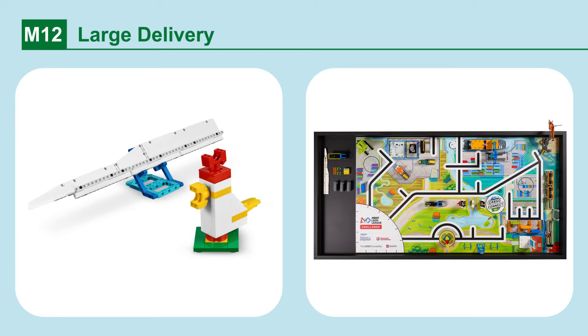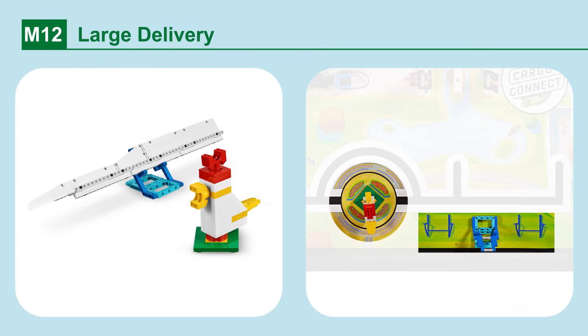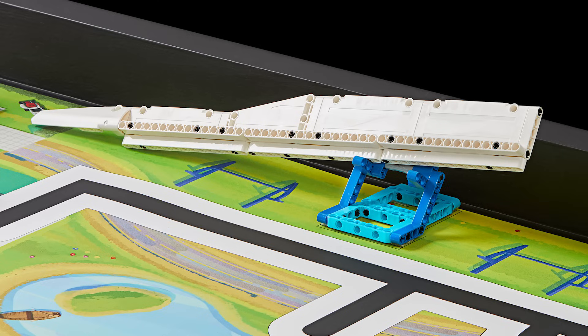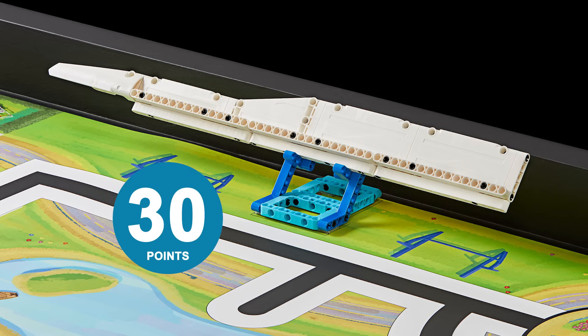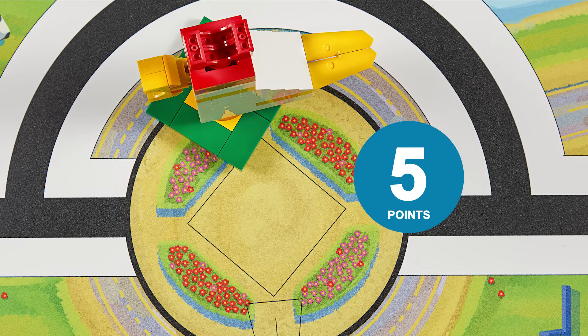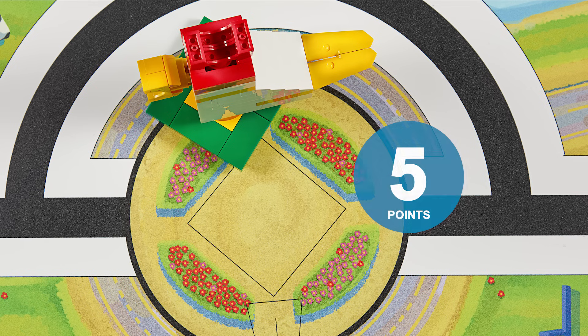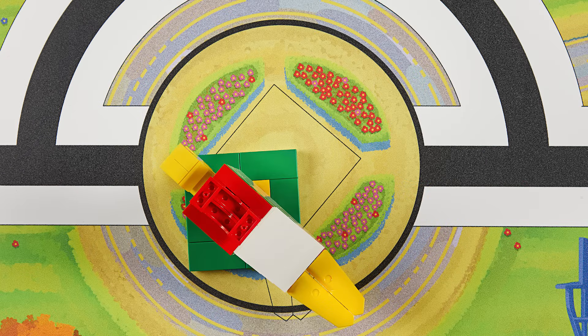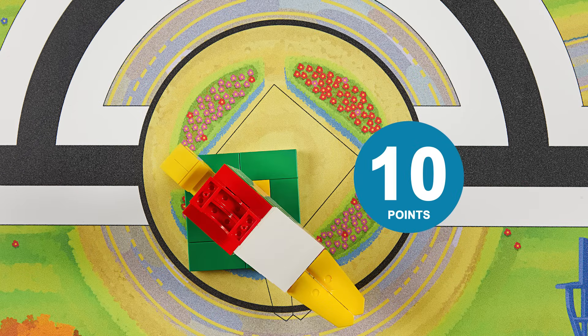Mission 12. Large delivery. Transport the turbine blade to the blue holder, avoiding the chicken statue. If the turbine blade is touching only the blue holder and the mat. Or, if it is touching just the blue holder. If the chicken statue is upright with its base partly in its circle. Or, if it is upright with its base completely in its circle.